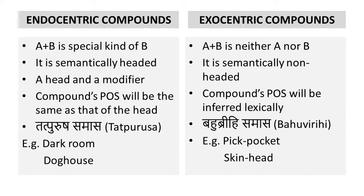In contrast to endocentric compounds, exocentric compounds are those where A plus B doesn't denote any special kind of B; A plus B is something very different — neither denoting A nor B. Unlike endocentric compounds which are semantically headed, exocentric compounds are semantically non-headed, and the compound's part of speech is inferred lexically. The Sanskrit name for exocentric compounds is bahuvrihi samas. For example, 'pickpocket' is not a special kind of pocket but refers to a person who steals from others' pockets.